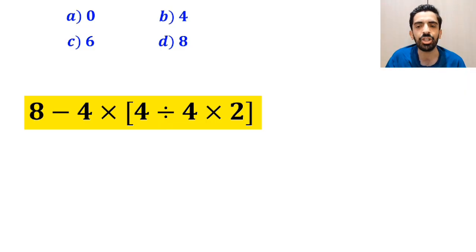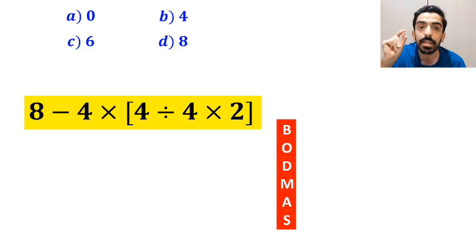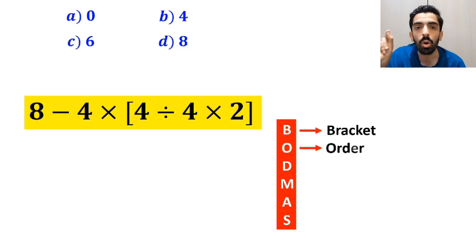To solve this question, we need to strictly follow the BODMAS rule step by step. And this rule, B stands for bracket, O stands for order,